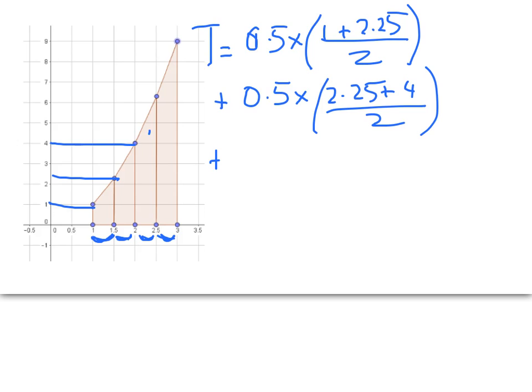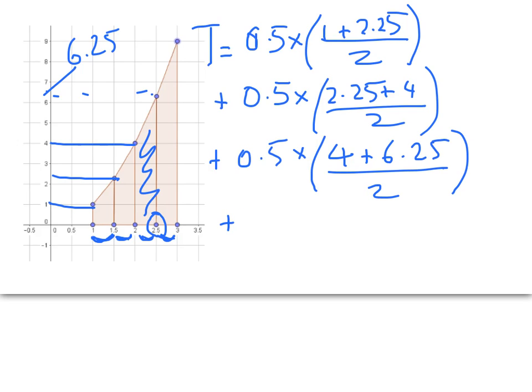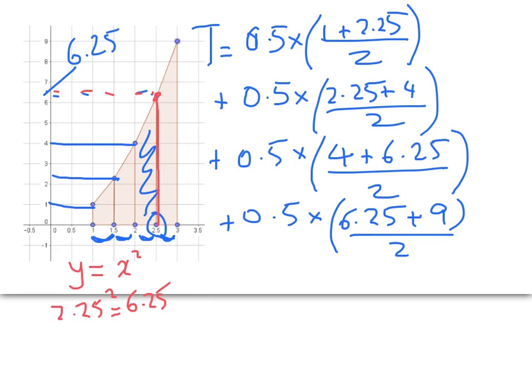My next trapezium is this one in here. So it's 0.5 times the average of the length, which will be 4, plus now 2.5 squared, which is giving me a value of 6.25. And lastly, we get 0.5 for the width, and the average is of 6.25 plus 9 squared. So just going over that again, for that last rectangle, the short side here has length of 6.25. So 6.25, in case you missed it, our function is y equals x squared. So 2.25 squared gives us 6.25. Similarly here, when I take 3 and I square it, I get my y value of 9.